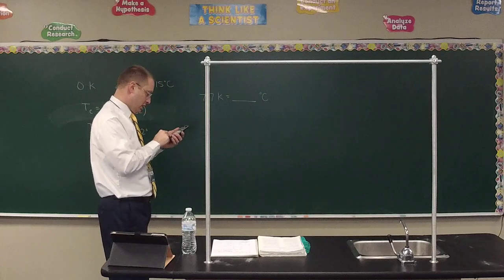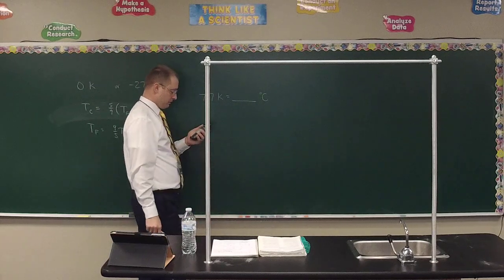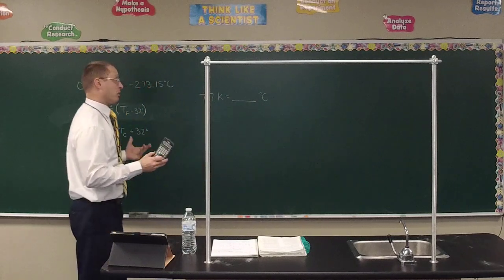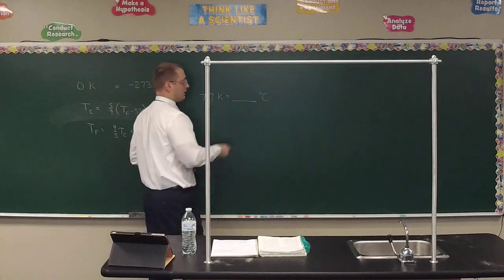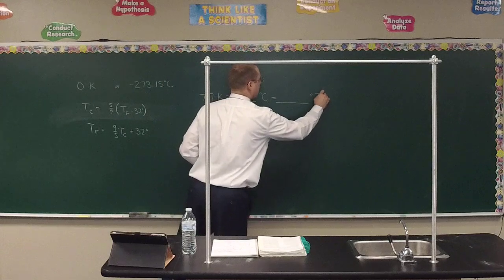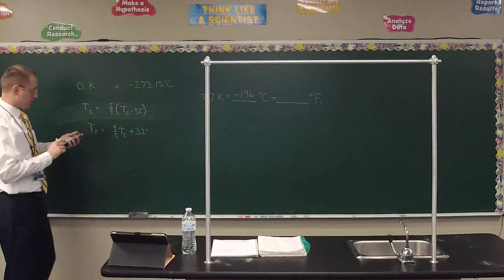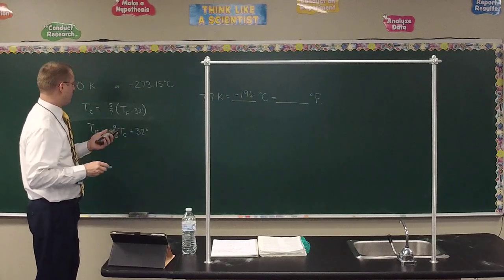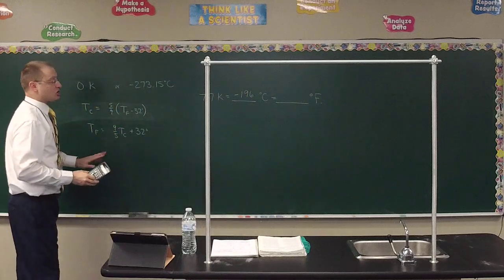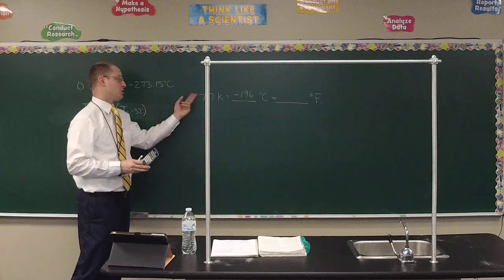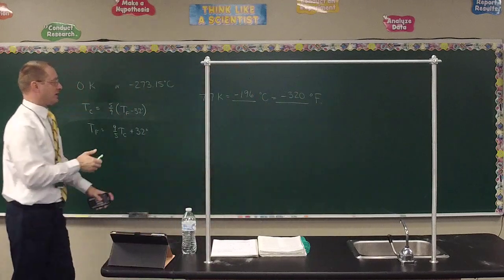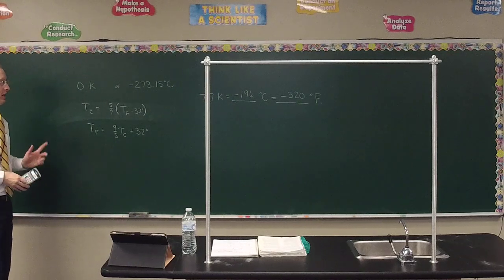77 K − 273.15 = −196.15°C, which rounds to −196°C to the nearest whole number. Then we use −196.15 to convert to Fahrenheit: F = (9/5)(−196.15) + 32 = −321.07°F. Since we started with a two sig-fig number and the operation involved multiplication, we apply two sig figs: the answer is −320°F, though −321°F is also acceptable given the mixed operations involved.